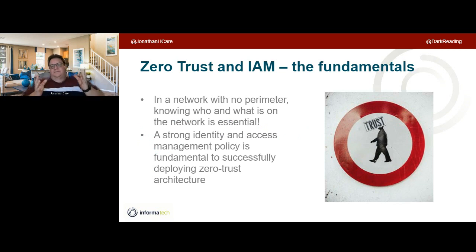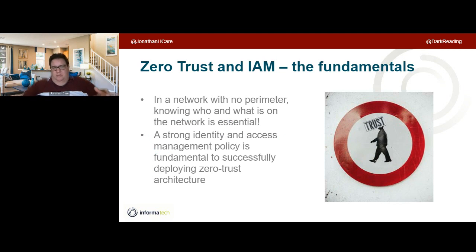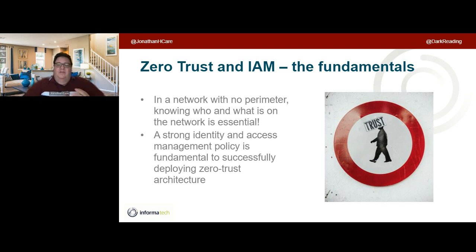How does IAM fit into a genuine zero trust? It fits in at the core. If we have a zero trust network, conceptually we have no perimeter — we do not rely on the perimeter as a security control. Therefore, we need to know who's on the network, what's on the network, and what they are doing. A strong identity and access management policy is fundamental to successfully deploying zero trust architecture.